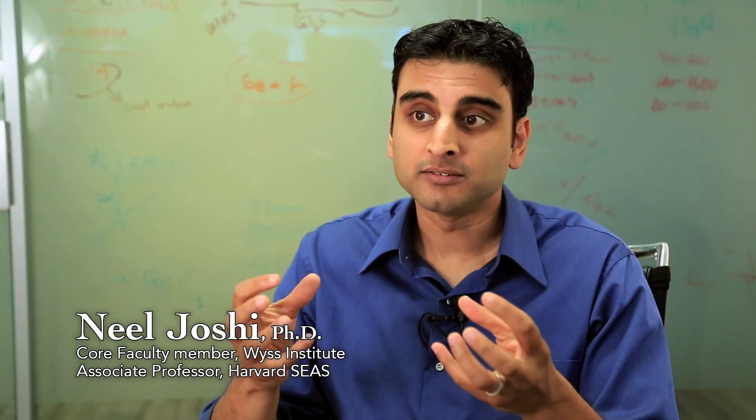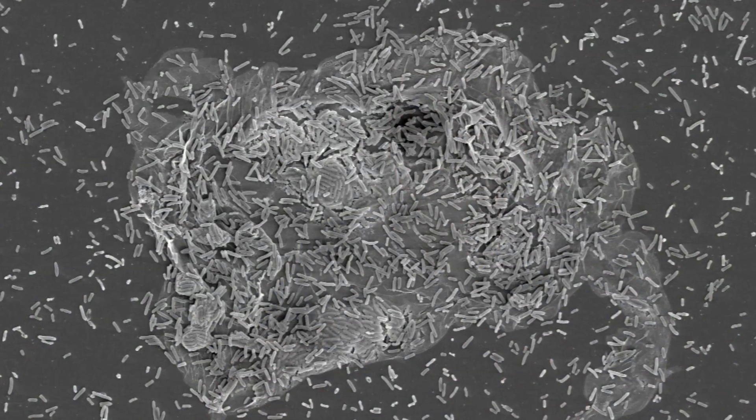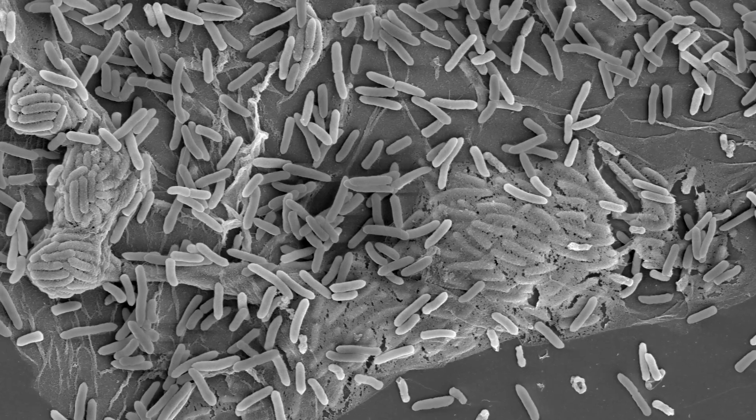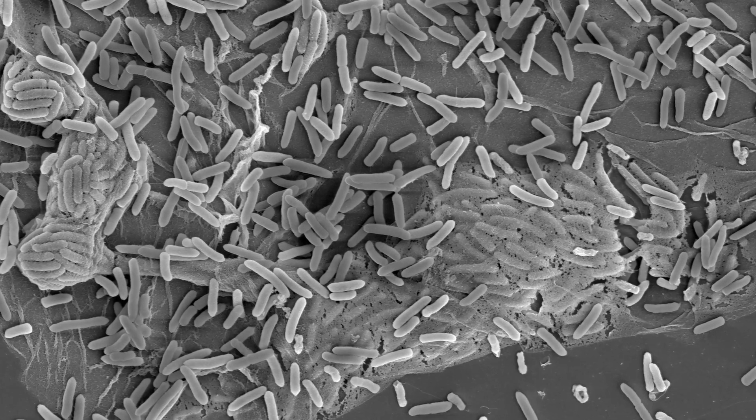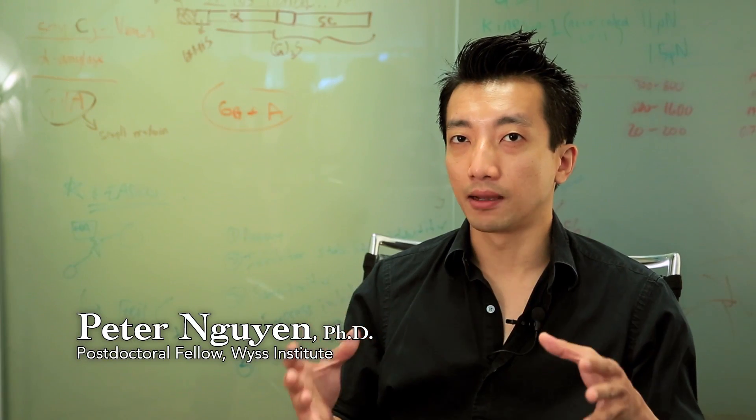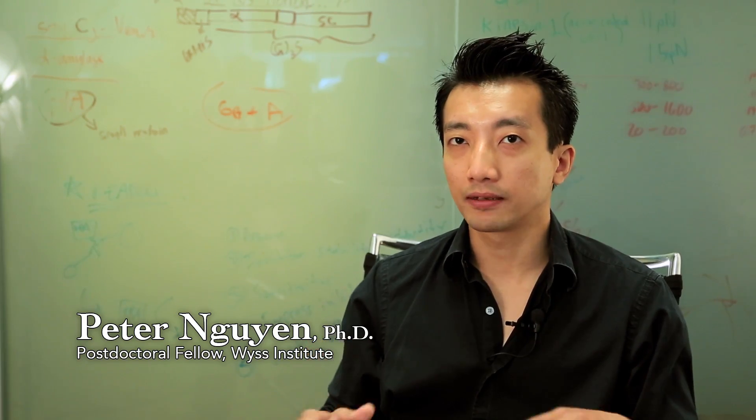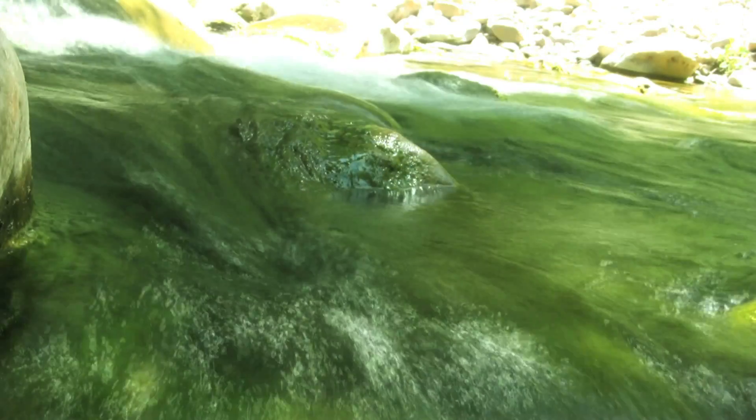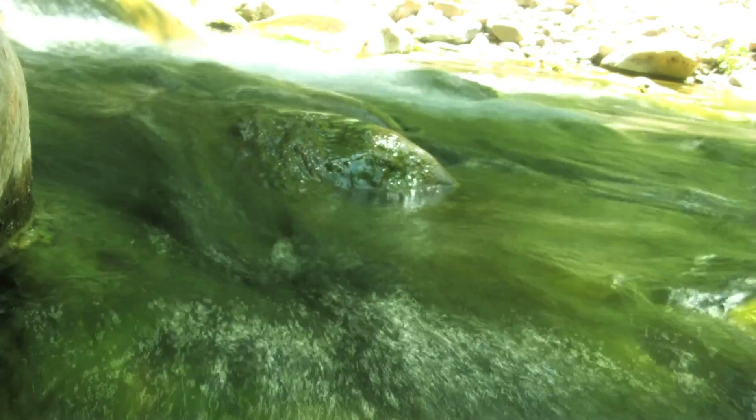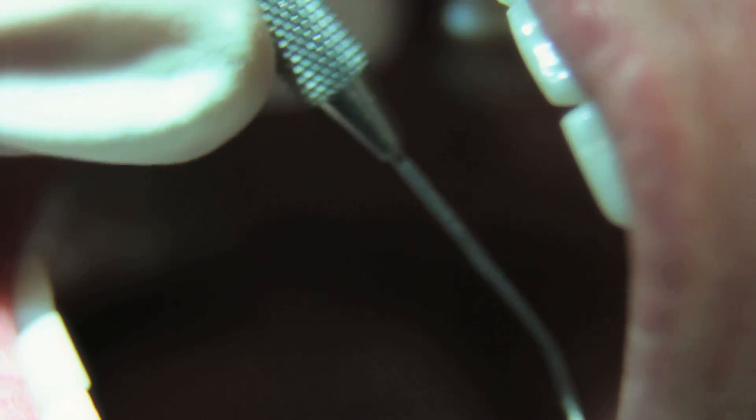Biofilms are essentially groups of bacterial cells, communities that are encapsulated in a matrix that the cells themselves produce. They can actually secrete something that will modify their environment. It's something for them to stick onto, such as a rock in a stream, or to stick onto your teeth and that's where we get plaque from.